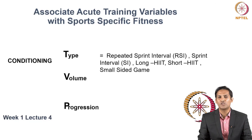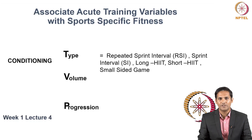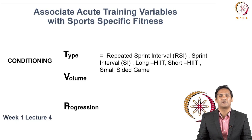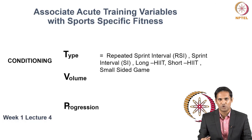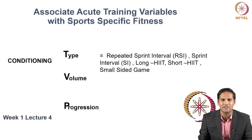The stimulation you give to improve each of these six types of conditioning can be either long HIIT, short HIIT, small sided games, sprint intervals, or repeated sprint intervals. These are the different variations of stimulation you can use to improve Type 1, Type 2, Type 3, Type 4, Type 5, or Type 6 conditioning.